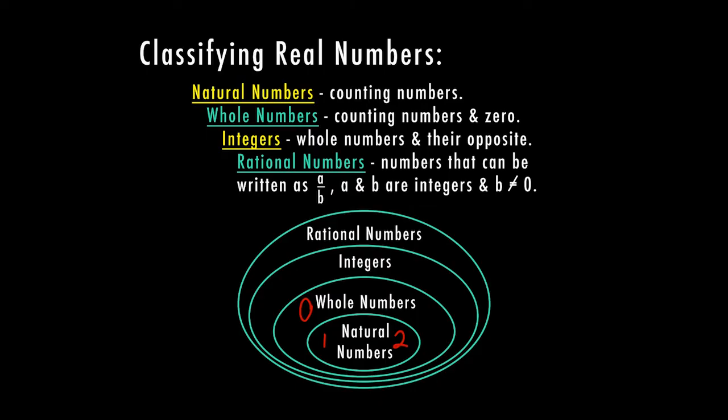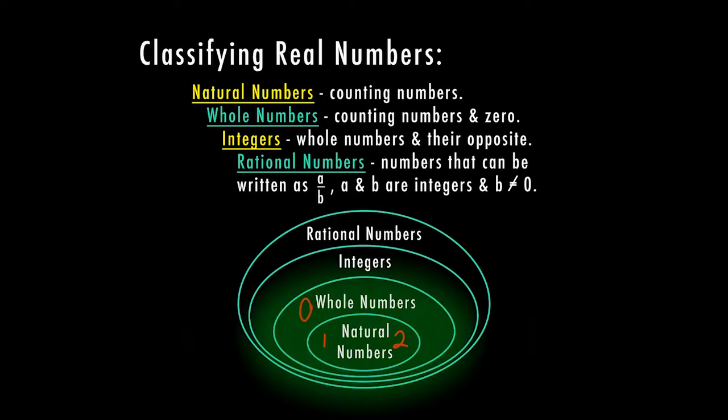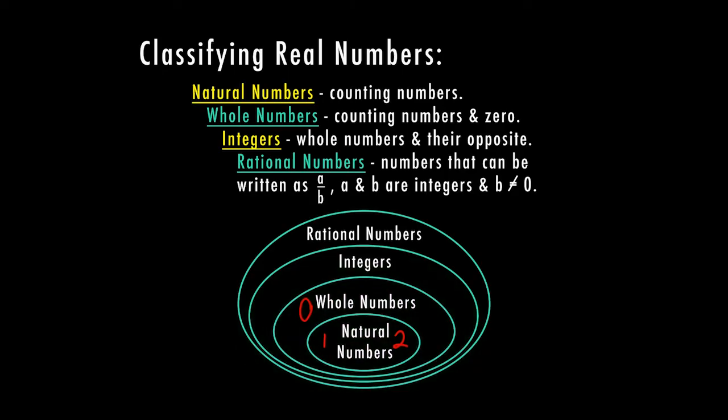Integers are going to include your whole numbers, your natural numbers, and their opposites. The opposite of any whole number is going to be a negative of that number.